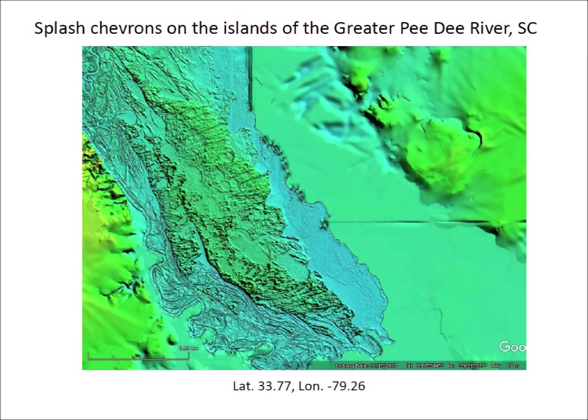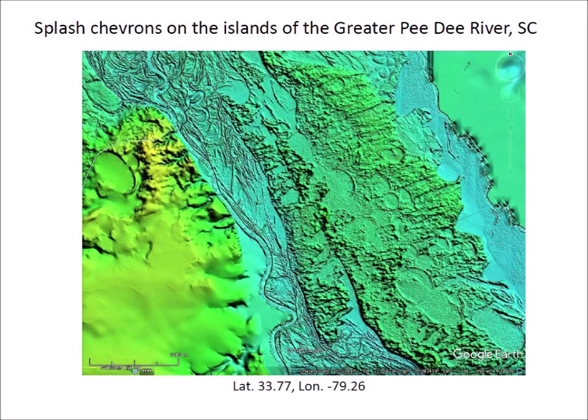These are some splash chevrons on the islands of the greater Pee Dee River in South Carolina. A closer look shows the tortuous path of the river with many oxbows in its current floodplain. An island in what was once a broader river has many chevron dunes. The LiDAR image shows that some Carolina Bays were covered by the chevrons and then other Carolina Bays formed on top of the chevrons in a very dynamic terrain-altering scenario. Many features have been eroded by water since their emplacement.